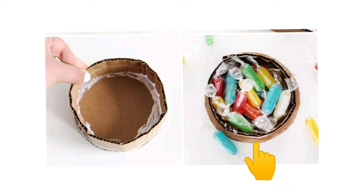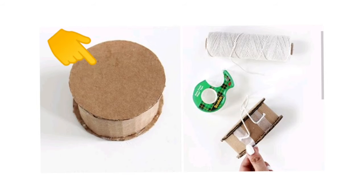And then once both circles have been glued to the cardboard strip, tape a piece of string to the top. This will be what you hang the piñata from.